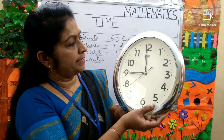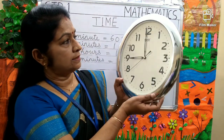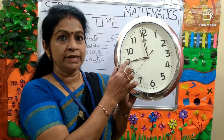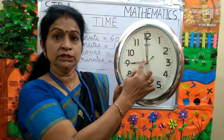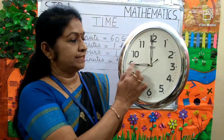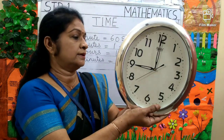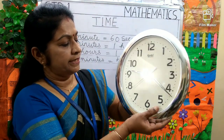15 minutes left to 8. Can you tell me the time now? The hour hand is on 9 and the minute hand is on 12. So the time is 9 o'clock.